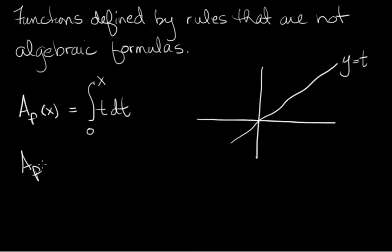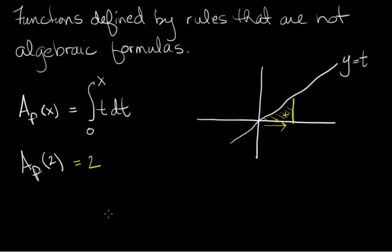For example, if I'm looking at A sub f of 2. I look at this picture of y equals t, and I go out two units, and I draw the vertical line here, and I know that A sub f of 2 is that signed area. I'm going from left to right, so it would be a positive contribution. Its area is 2 times 2 divided by 2, which is 2. So A sub f of 2 is 2.